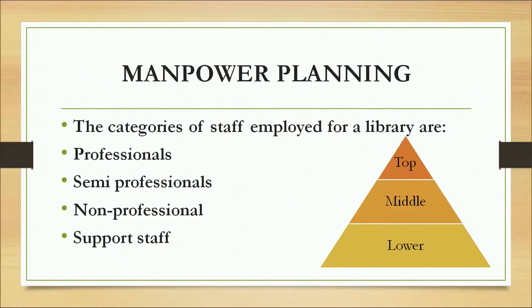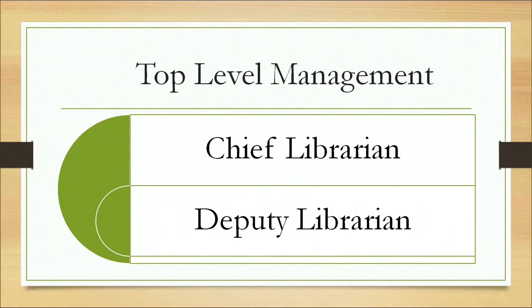The categories of staff employed for libraries are, as already discussed: top, middle, and lower level. The categories of staff are professionals, semi-professionals, non-professionals, and supporting staff. Their functions, responsibilities, and authorities are explained accordingly. At the top level, qualified library and information professionals are required — usually professionals with good years of experience. They carry out functions of various roles such as responsibilities and positions of authority, and they are involved in planning, policy, and decision making.